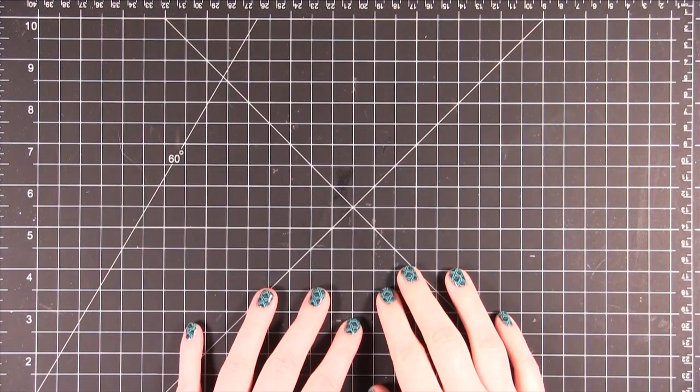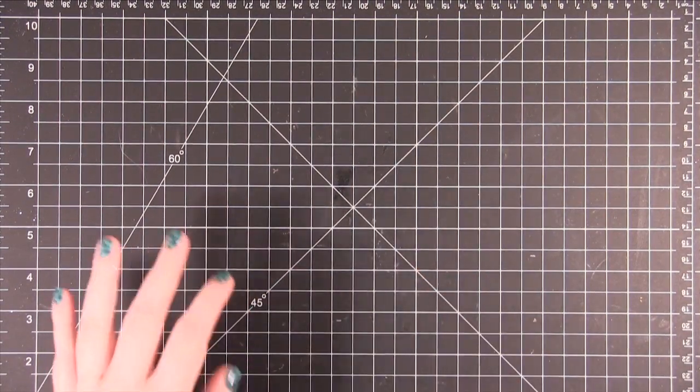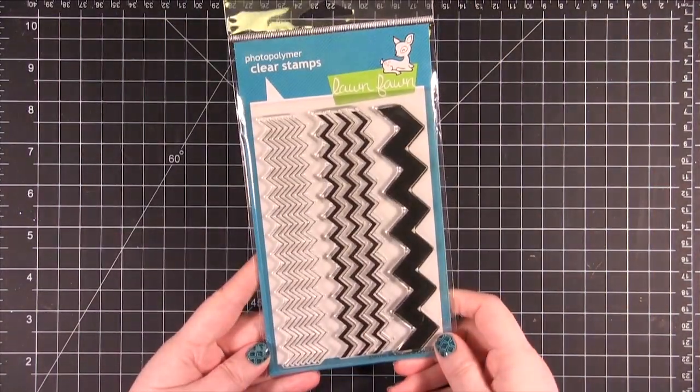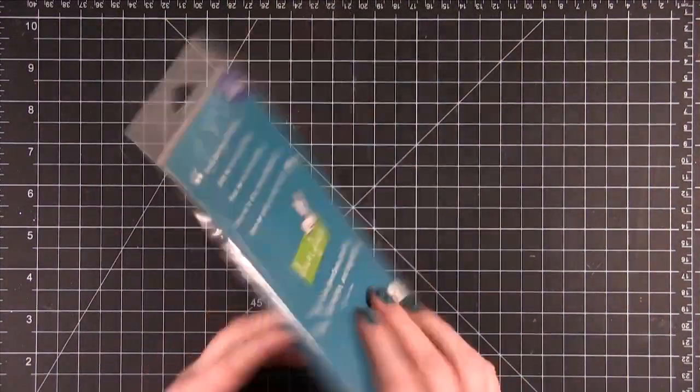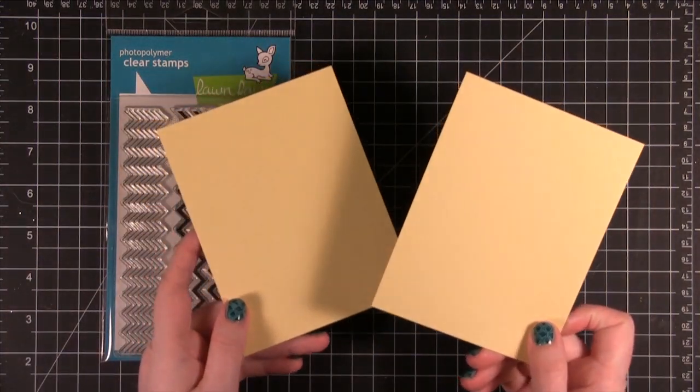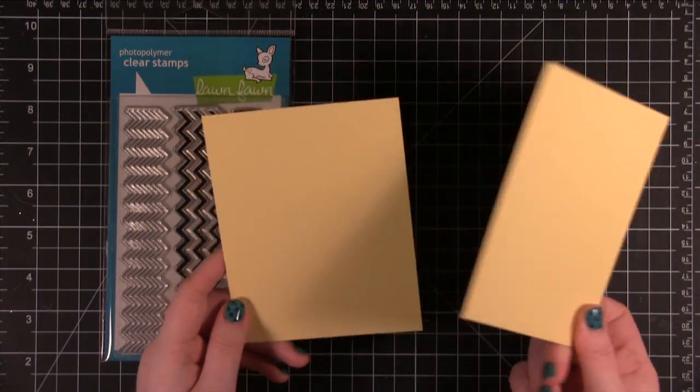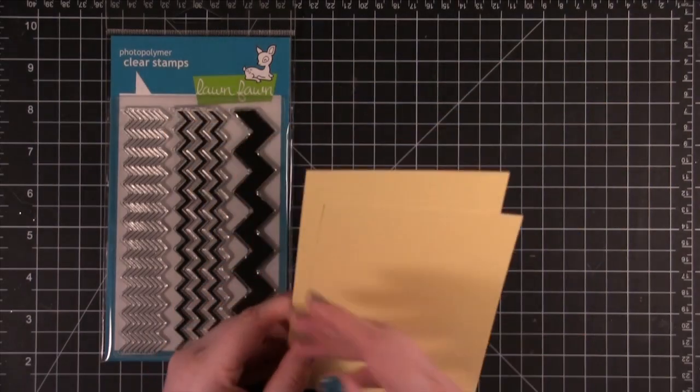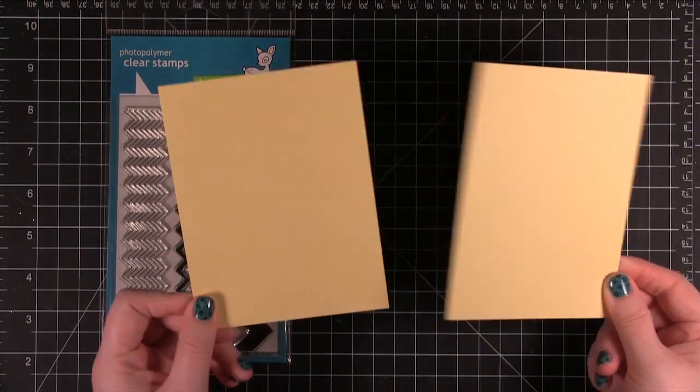Hi everyone! Welcome to another video for simonsaysstamp.com. Today I'm starting out with this stamp set from Lawn Fawn. This is the Chevron Backdrops. I also have two pieces of daffodil layering paper from Hero Arts. These are cut to 4 1/4 by 5 1/2 inches each.